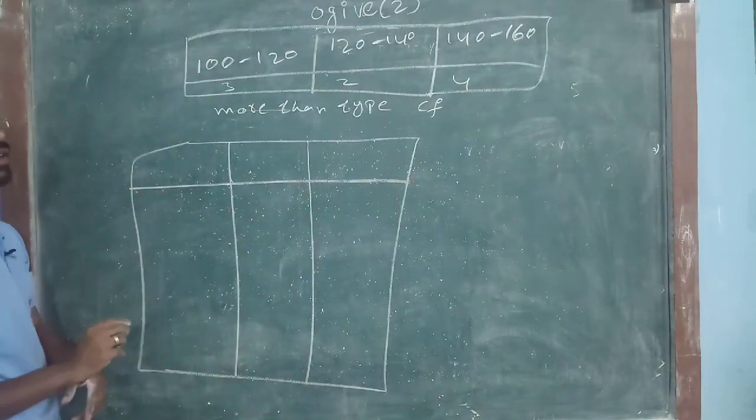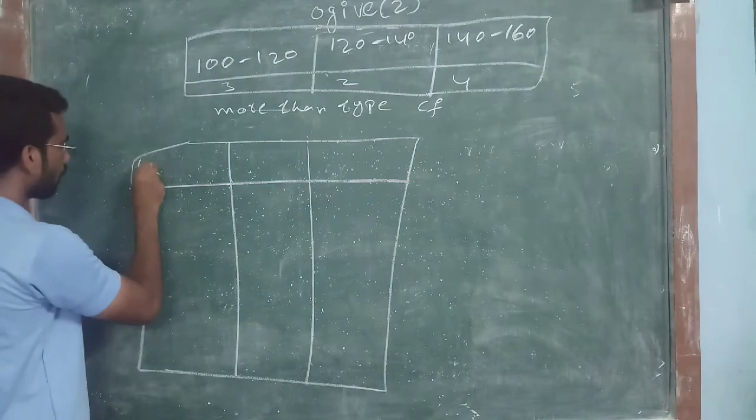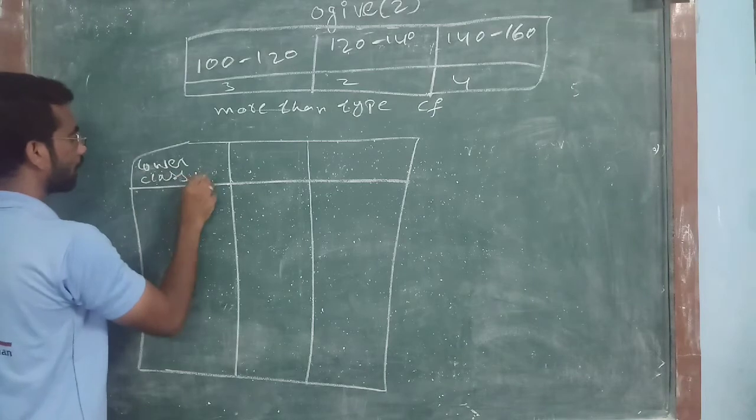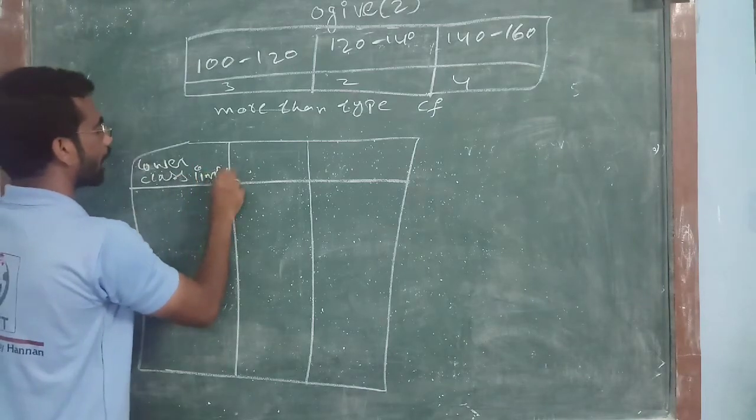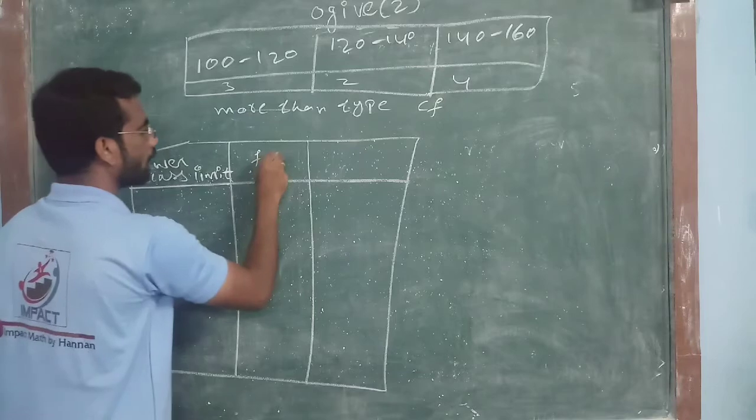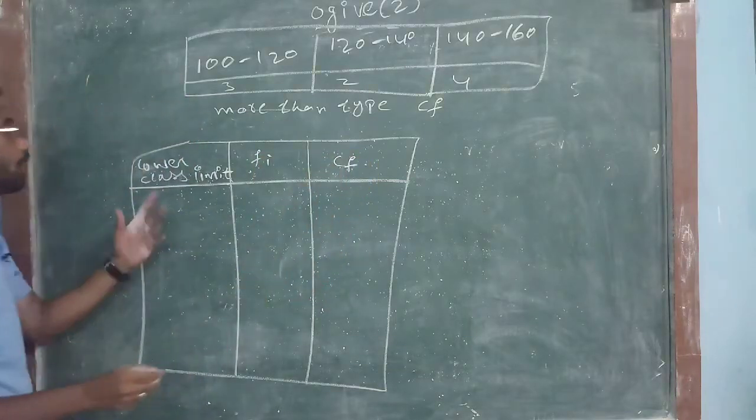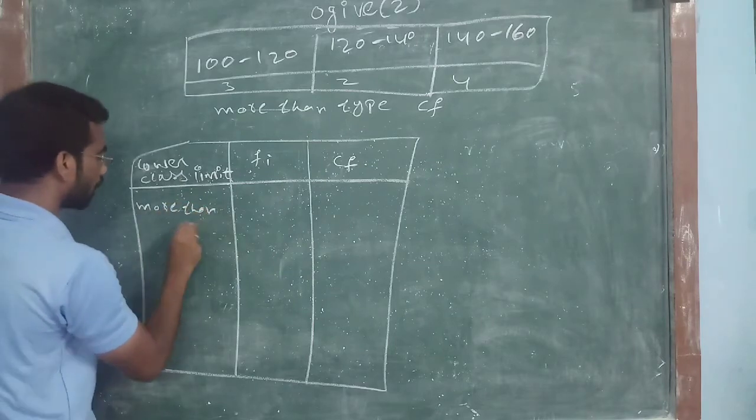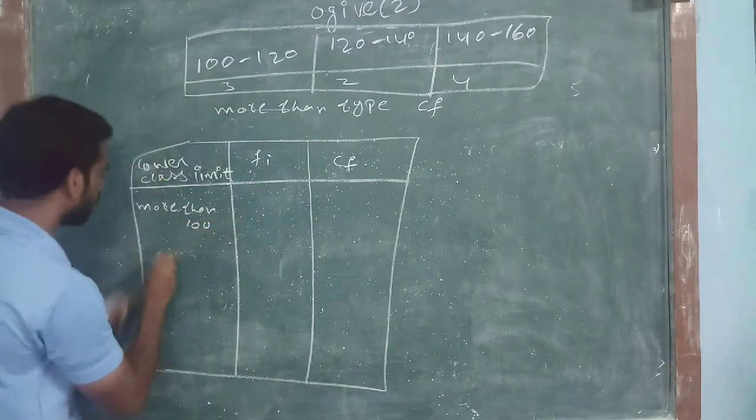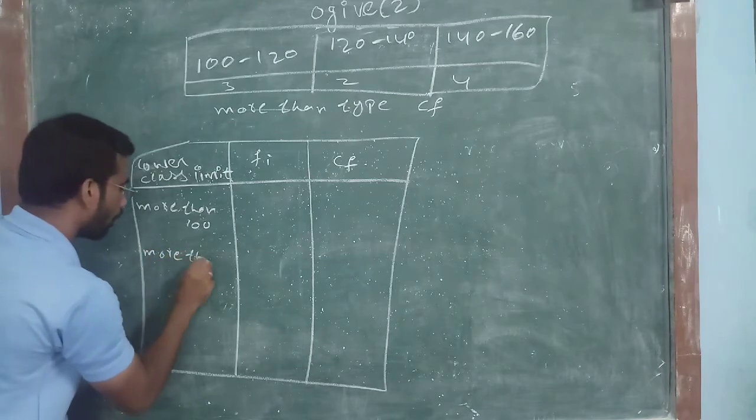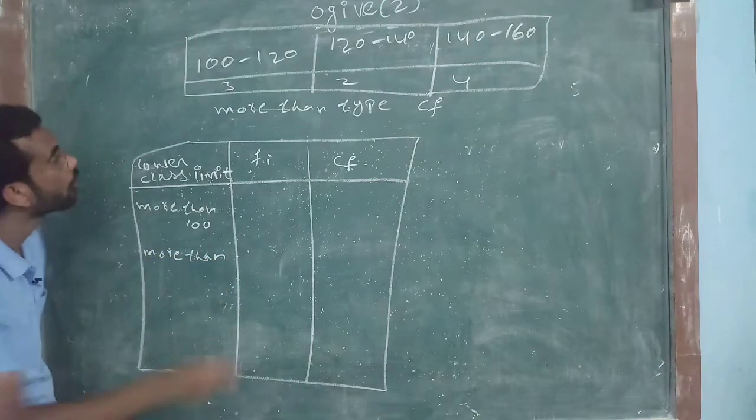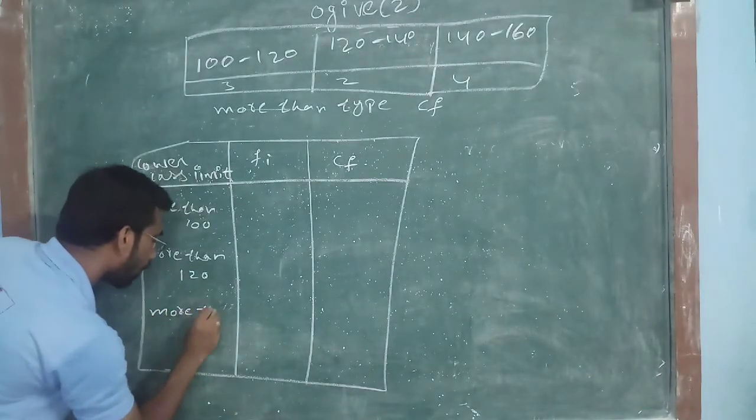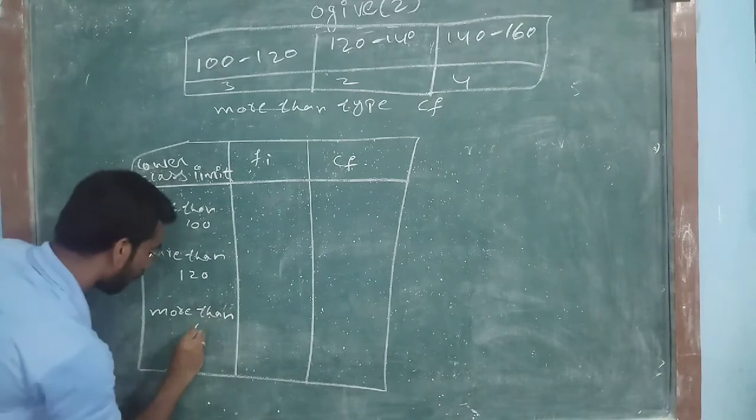In this table... Now, previous we have taken upper class. Now, lower class limit. Okay? Now, this is FI and CF. How much it is? More than 100. More than 120. Next, more than 140.